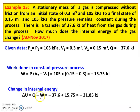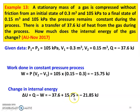Now, the change in internal energy: ΔU = Q − W = −37.6 − (−15.75) = −37.6 + 15.75. Calculating, it is −21.85 kJ. So the change in internal energy equals −21.85 kJ.